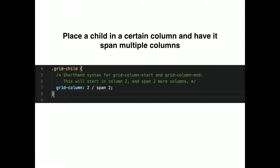Putting a child in a certain column and having it span multiple columns is pretty straightforward. This example starts in the second column and spans two, so it goes from column two to column three. There are about 27 ways to do a single thing in CSS Grid.